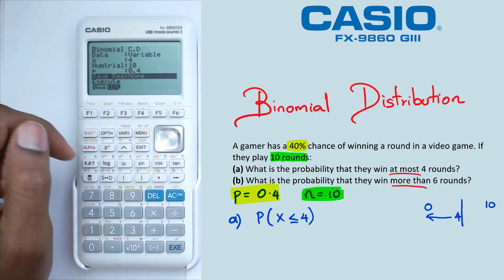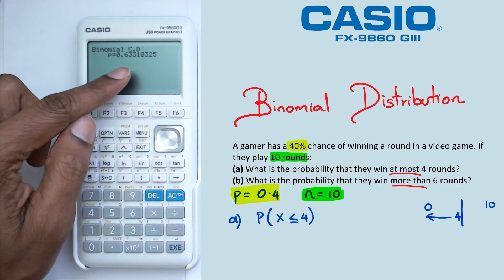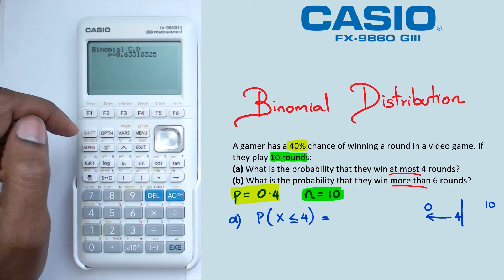So when we calculate X is less than or equal to four, we press enter, we're going to get 0.6331.